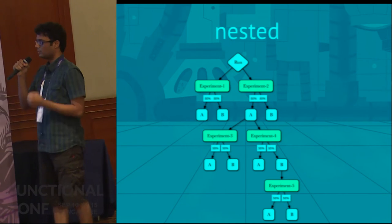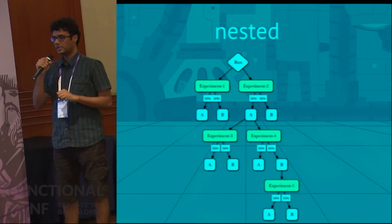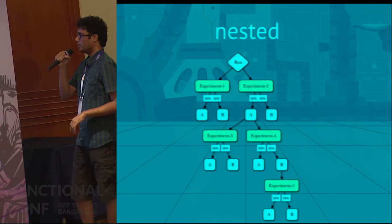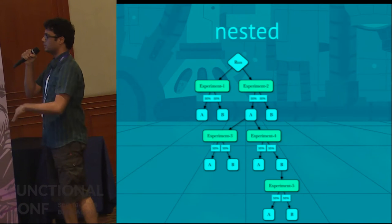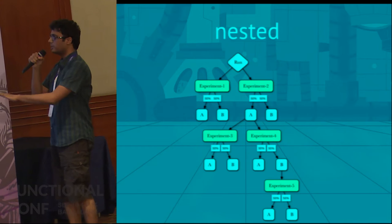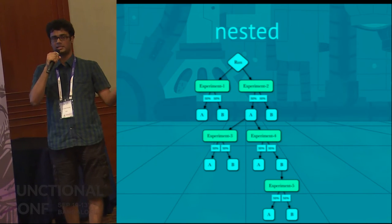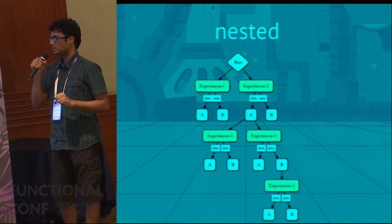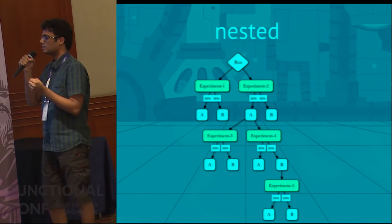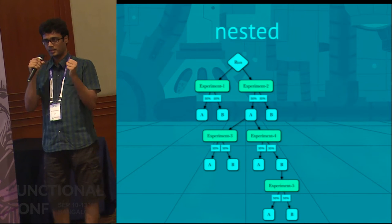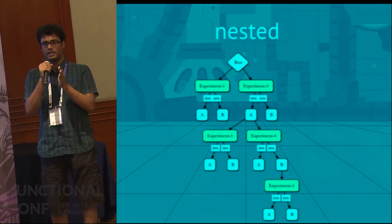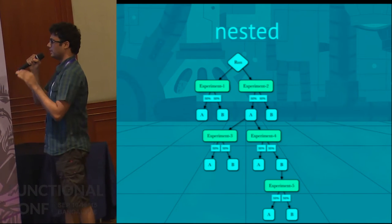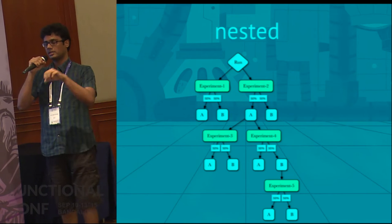The next model we went to production with is inspired by Google's paper, and we are calling it the nested or layered model. It is basically a tree structure. This gives us all the benefits of the precise and messy model, except that it gives us finer control over traffic. We can restrict the traffic for an experiment to exactly the kind of people we want to put into that experiment. An experiment can be nested under the bucket of another experiment.